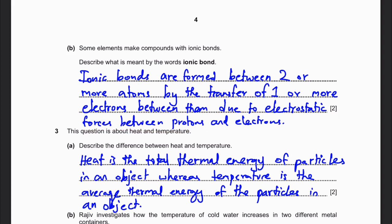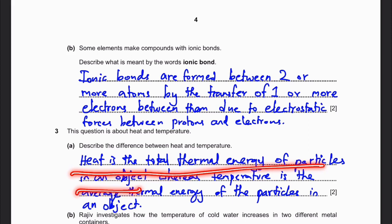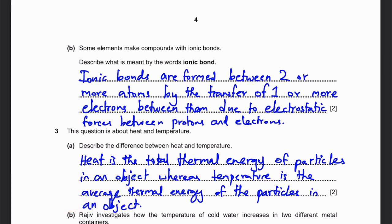Question 3 is about heat and temperature. Describe the difference between heat and temperature. Heat is the total thermal energy of particles and objects. Temperature is the average thermal energy of particles and objects. Heat is the total; temperature is the average. That's the difference.